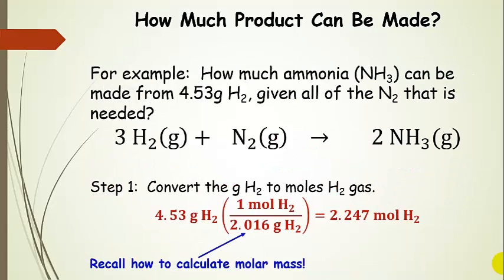Let's do an example. How much ammonia can we make from 4.53 grams of hydrogen gas, given all of the nitrogen needed? That means nitrogen is in excess, so we focus on how much hydrogen we have. The first step is converting hydrogen gas to moles. Notice the molar mass is two times what's on the periodic table because there are two hydrogen atoms in H₂. So 4.53 grams divided by the molar mass gives us 2.247 moles of hydrogen gas.